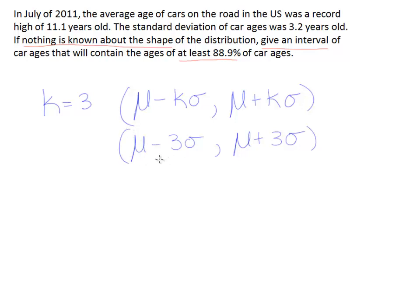Now it's just a question of what is the mean and the standard deviation. They tell us the mean was 11.1, so 11.1 minus 3 times the standard deviation, which they tell us is 3.2. So there's our 3.2. Then we do the same thing on the other side, only we're adding the next time, so plus 3 times 3.2.